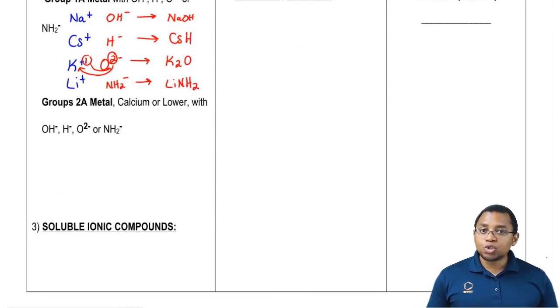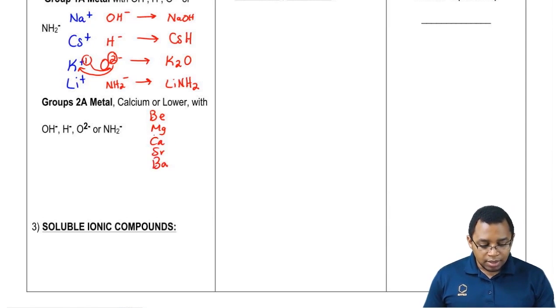The next one we have, group 2A metals. Here we're going to say calcium or lower when they're combined with these same four ions, create strong bases. What exactly do I mean by calcium or lower? Group 2A on our periodic table has beryllium, magnesium, and then calcium you have, strontium and barium. I'm saying calcium and lower, so calcium, strontium and barium. When they're with one of these guys, they create a strong base.